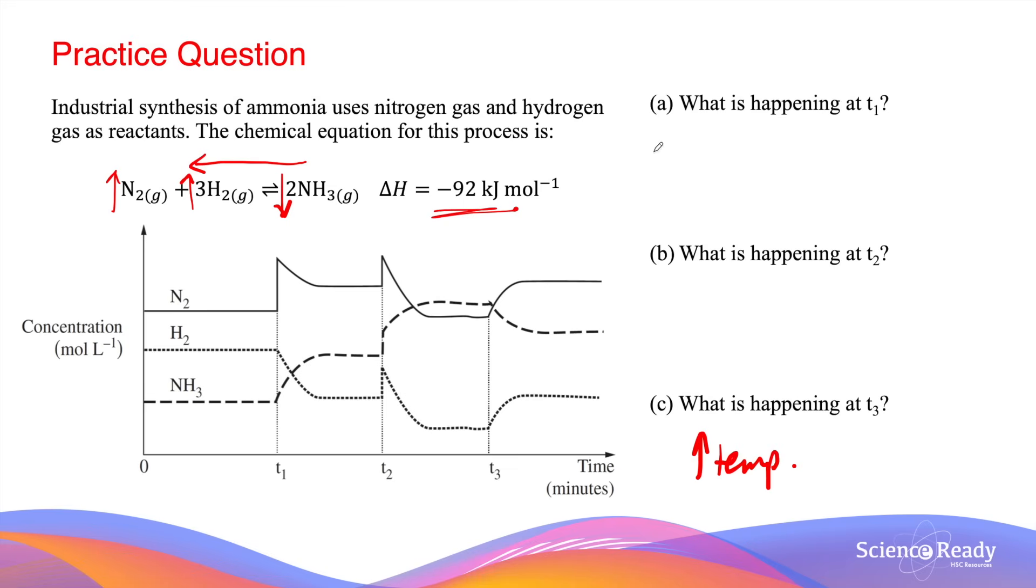Just to summarise, at T1, we are increasing the nitrogen concentration by adding some amount of nitrogen to the system. At T2, due to the fact that all the concentrations have suddenly increased, this is a change in pressure, precisely an increase in pressure or a decrease in volume.